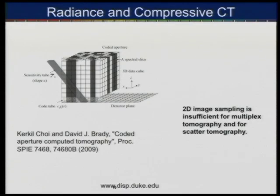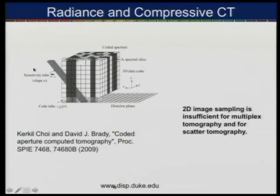Before we started doing experiments, back in 2009, Krukel, Choi, and I published a paper in SPIE on the similarity between coded aperture spectral imaging and coded aperture x-ray tomography. The basic idea was that if you had a source array simultaneously illuminating the object, we could put a coded aperture between the sources and the object, and each source would propagate in a different direction with a different code that we could then back out. Rather than doing tomography by illuminating with a sequence of sources, we could simultaneously illuminate with all sources, separate them mathematically, and do compressive tomography.